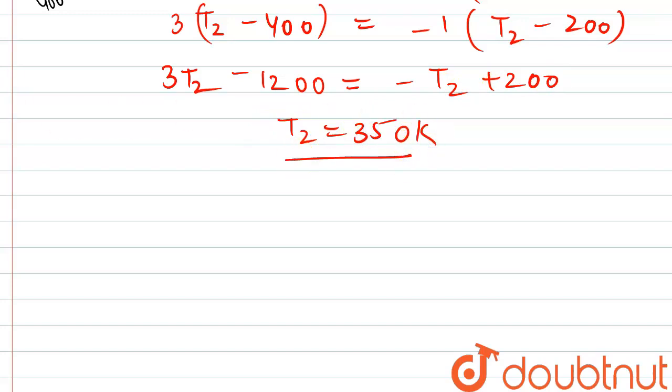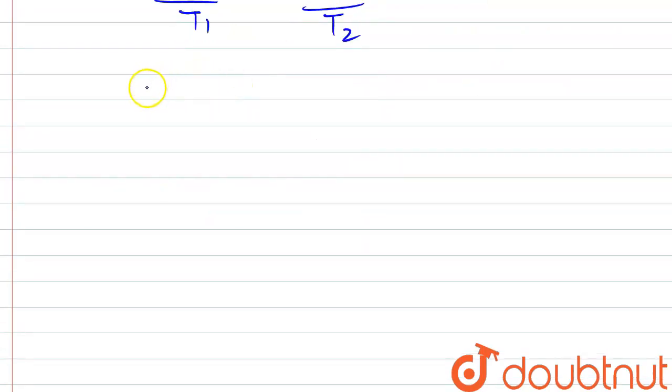Okay, we have to find out one more thing, that is V2. So for that we will use the expression P1V1 divided by T1 is equal to P2V2 divided by T2. Now putting the respective values here.